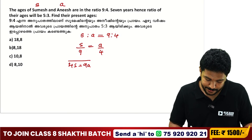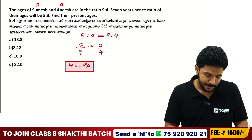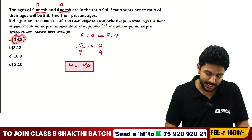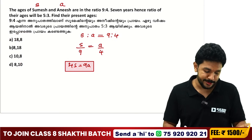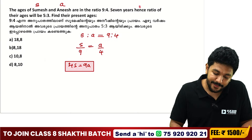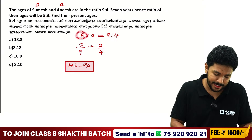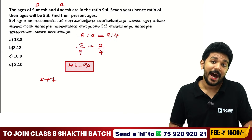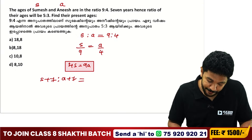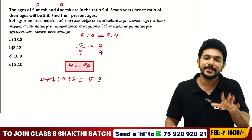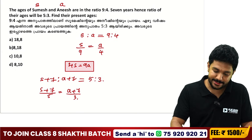So 4S is equal to 9A — that is our first equation. Seven years hence, the age ratio is 5 to 3. So S plus 7 to A plus 7 is equal to 5 is to 3. That means S plus 7 divided by 5 is equal to A plus 7 divided by 3.